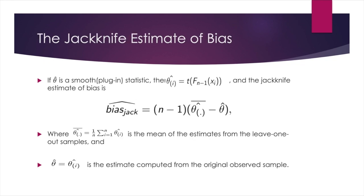If theta hat is a smooth plug-in statistic, then we can apply the Jackknife method to estimate bias. If we have the i's Jackknife replicate theta i hat, then the Jackknife estimate of bias is n-1 times the difference of these two parts. The first part being the mean of the estimates from the leave one out samples, and the second part is just the estimate computed from the original observed sample.